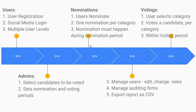Nominations must happen during the nomination period — let's say one week where users can log in and nominate. We also don't want one person being nominated multiple times. To handle that, we'll use Ajax to check if a name already exists in the database as the user types, so they can just select the existing entry instead of re-entering it.